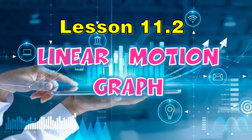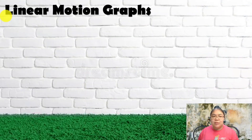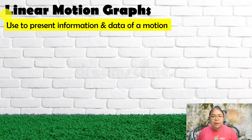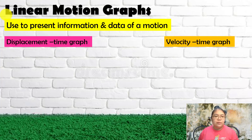Hi students, today I will continue our lesson — that's 11.2 Linear Motion Graph. We're talking about information from the data of the motion, meaning we refer to a graph to know the motion of a moving object. We separate this into two types of graph: the first is the displacement-time graph, and the other is the velocity-time graph.